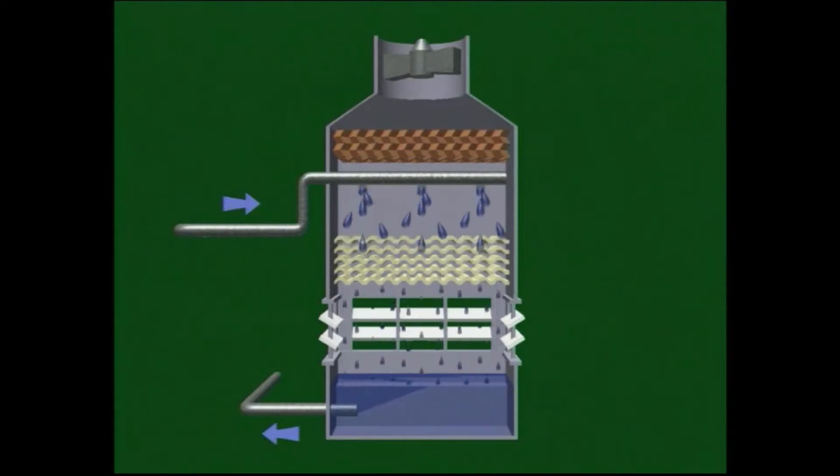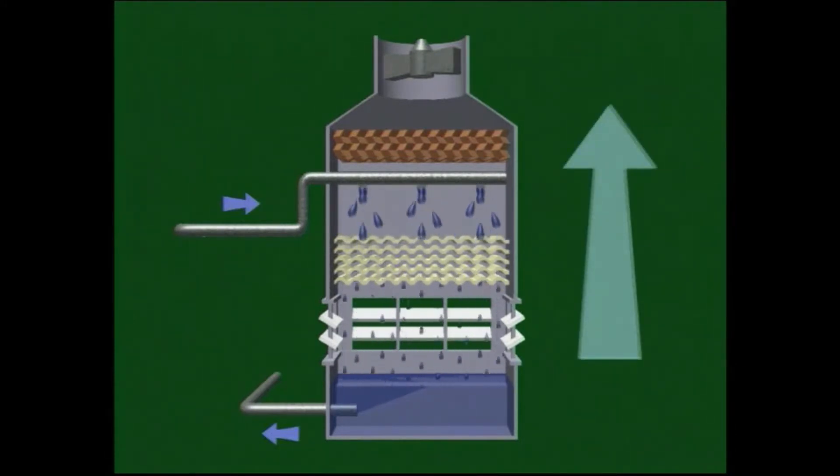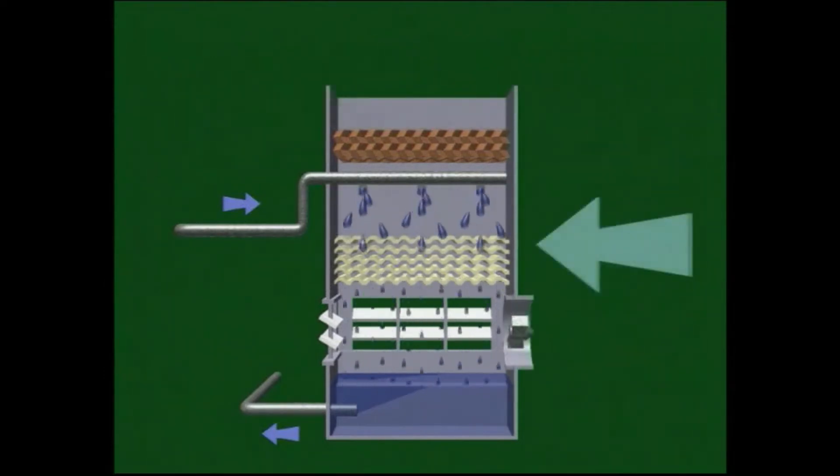The direction of the airflow may either be in opposition to the downward flow of the water when it is known as counter-flow, or across the flow of the water when it is known as cross-flow.